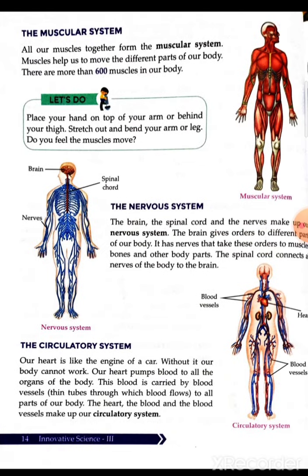All our muscles together form the muscular system. Muscles help us to move the different parts of our body. There are more than 600 muscles in our body. We must remember that muscles alone cannot help us move — muscles together with the bones help us do movements, whether it is smiling, writing, talking, or walking. Whatever movement we do, muscles and bones work together to complete it.